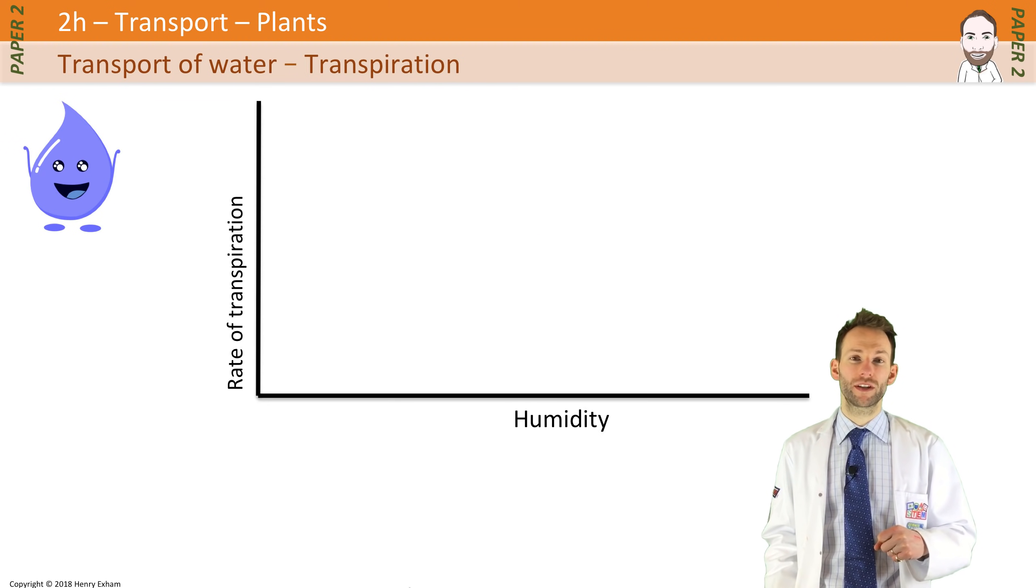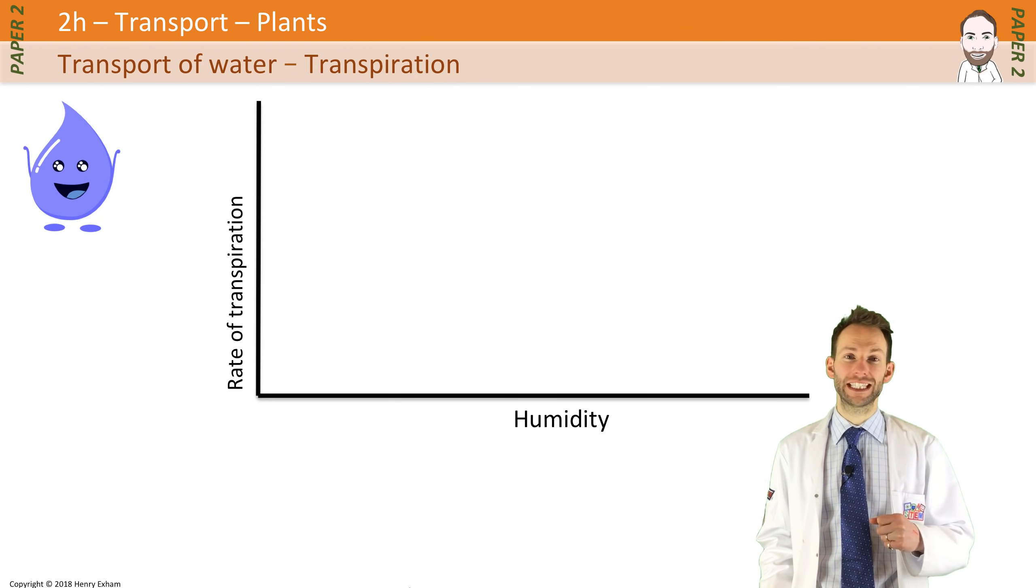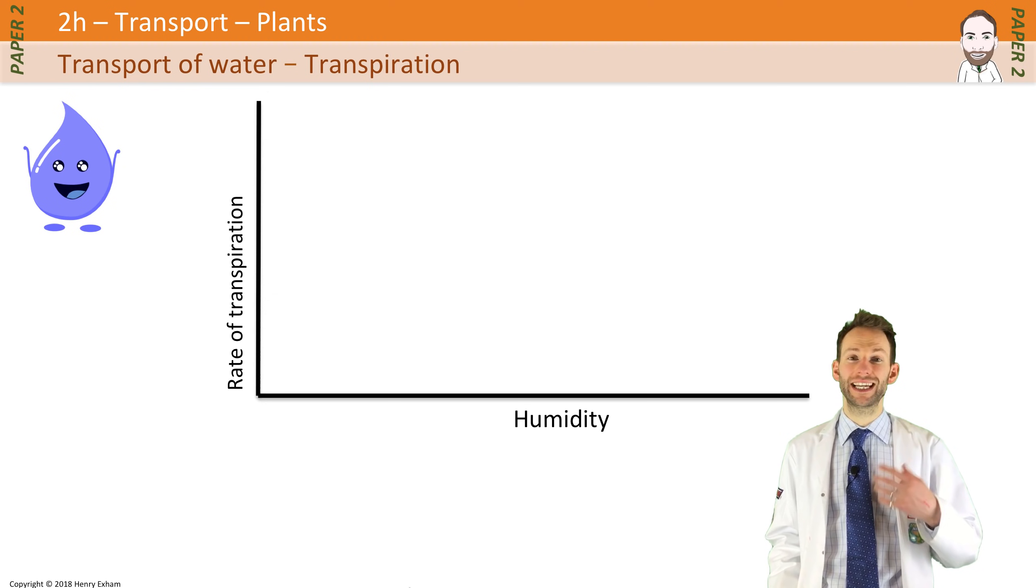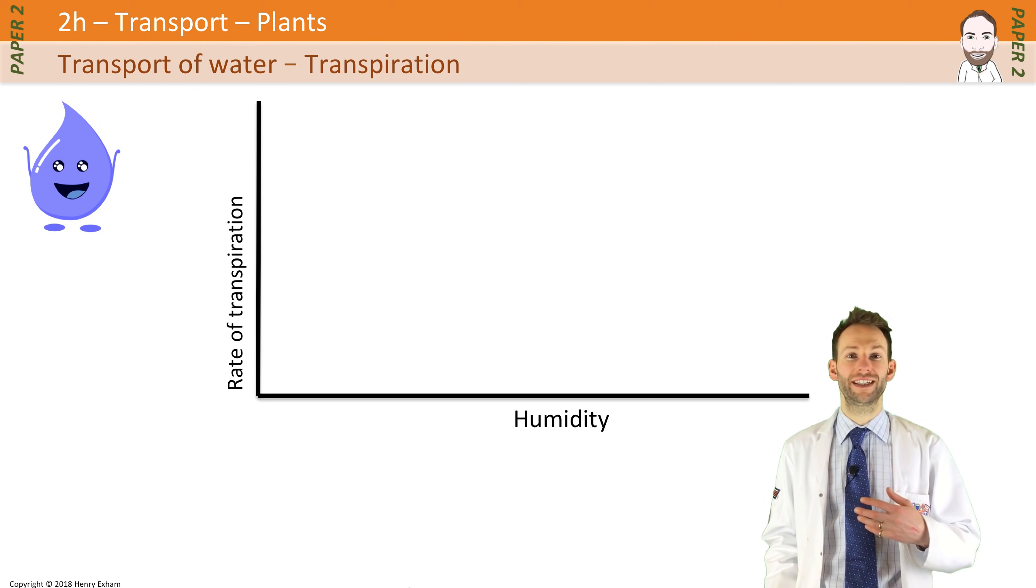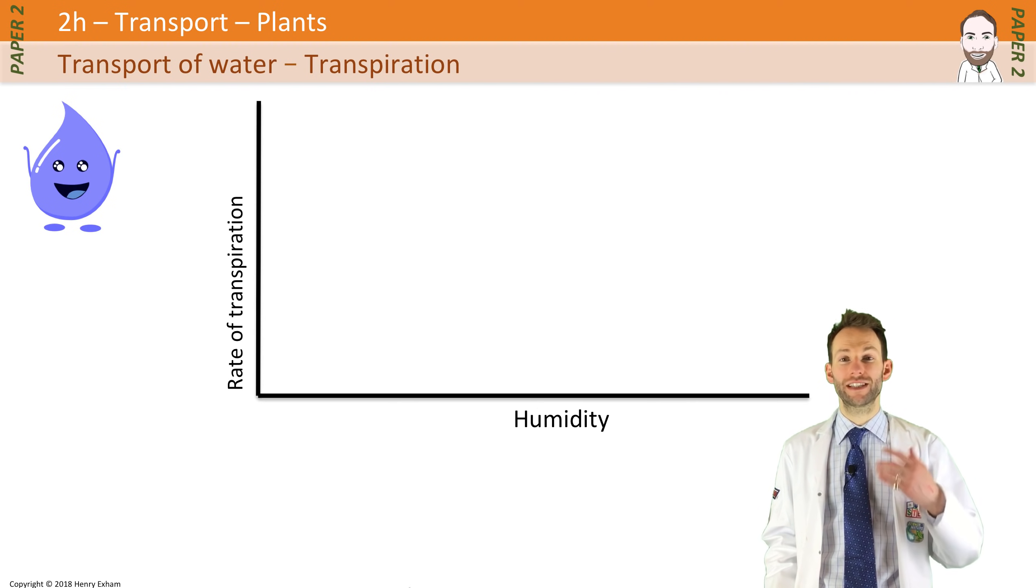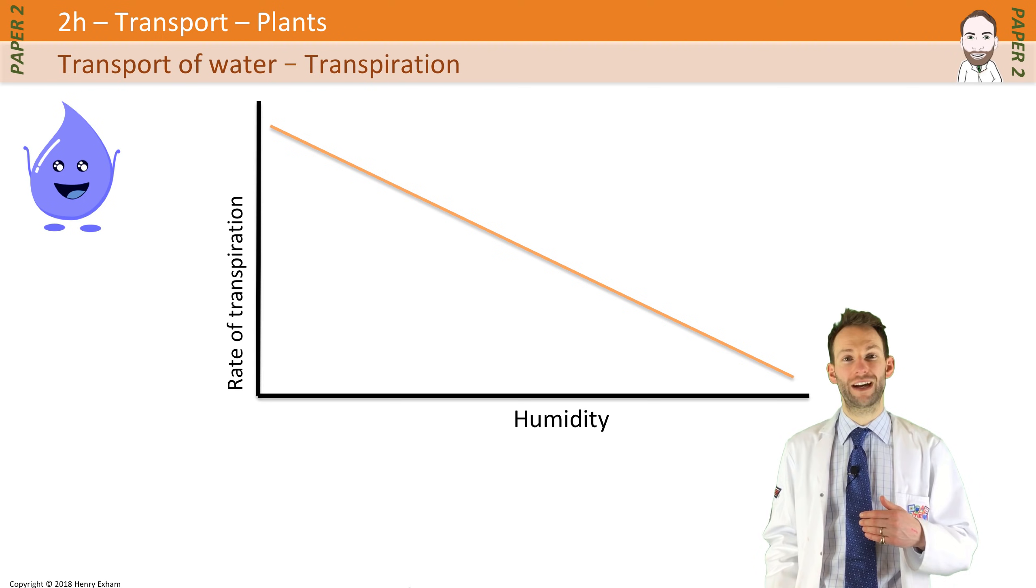With humidity, we actually have a graph that looks very different. Humidity is a measure of how much water is in the air. So if you increase the humidity, there is more water vapor in the air. Therefore, there is a lower concentration gradient between inside the leaf and outside the leaf, and therefore the rate of transpiration slows down.